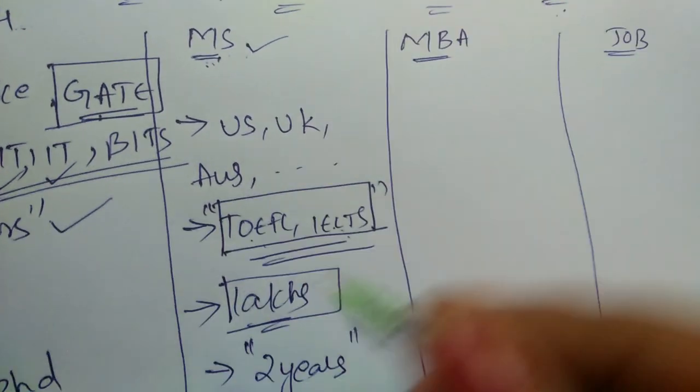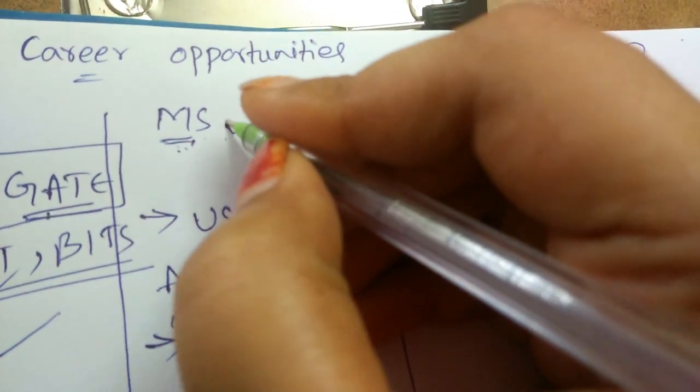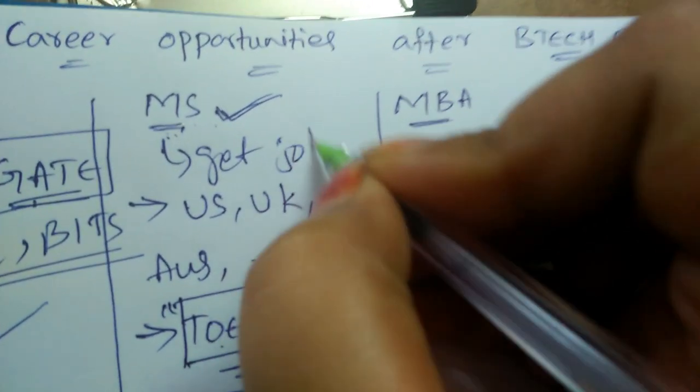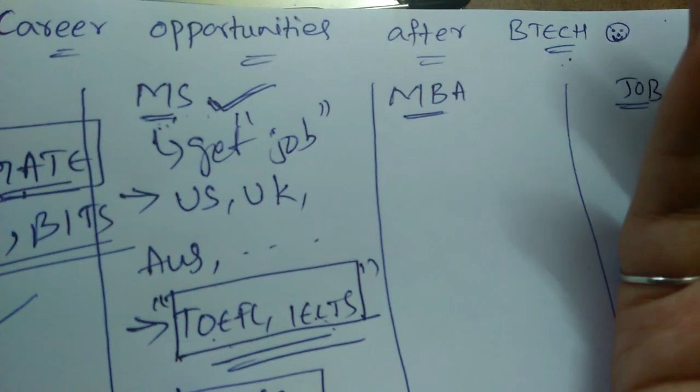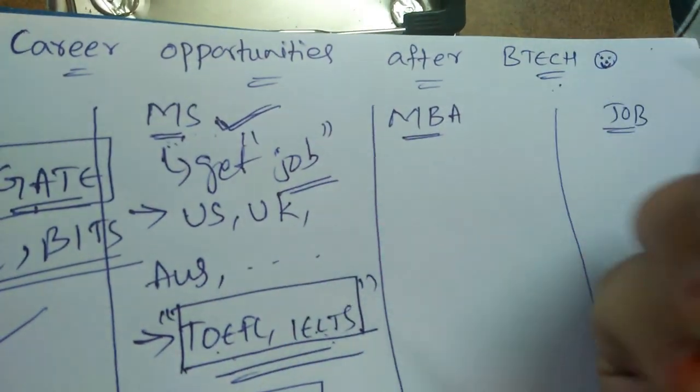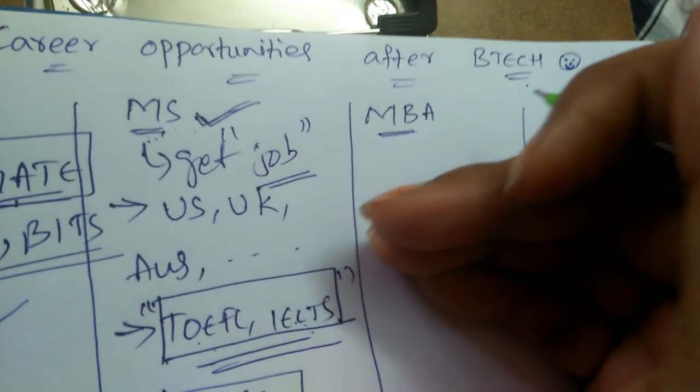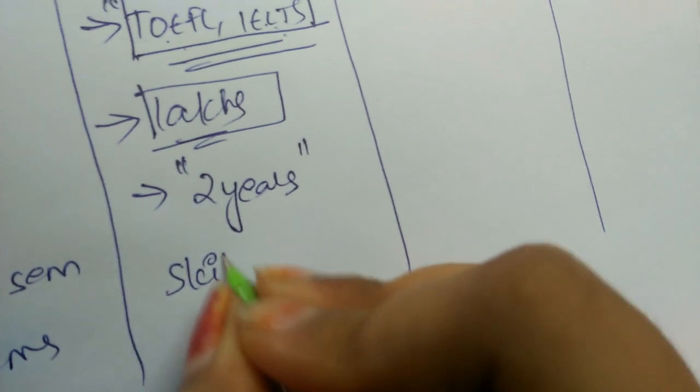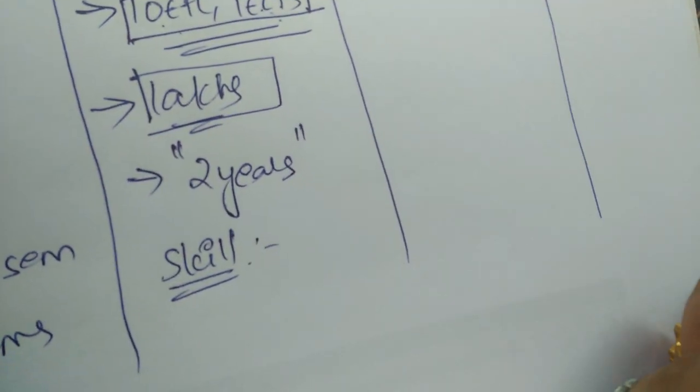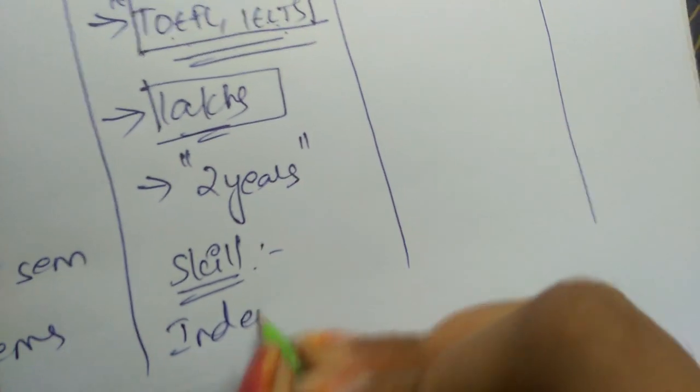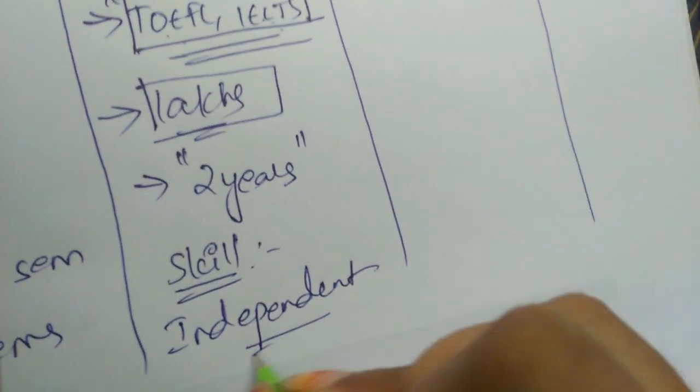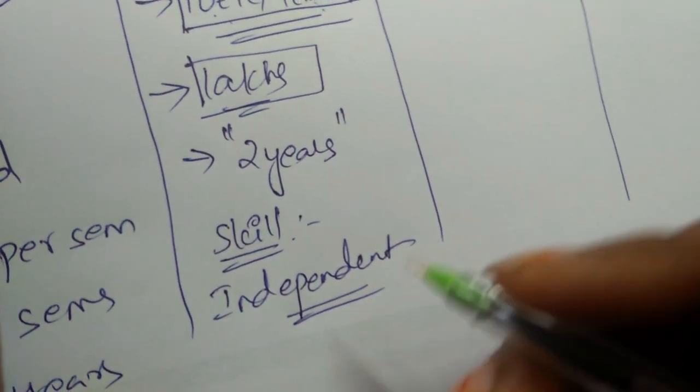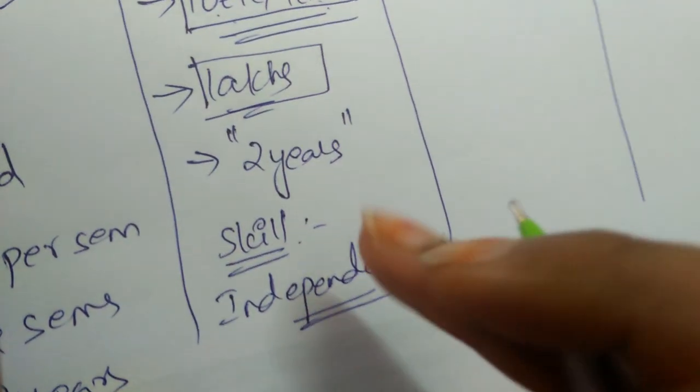The advantage of pursuing MS is after qualifying in MS, after getting the MS certificate you can directly get job in the same foreign country so that as you have spent in dollars you will also have opportunity to earn in dollars. Here is one skill which will be developed if you go for MS - you will become independent because in foreign countries you need to manage your own life, you need to study yourself, you need to earn and manage your income so that you will become independent.